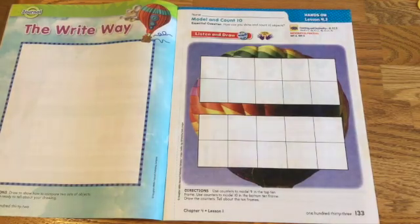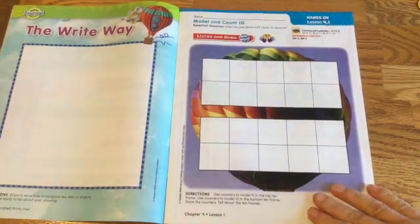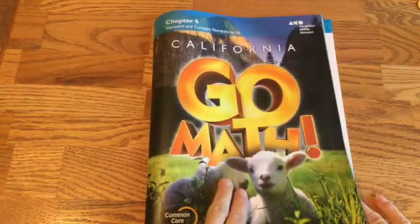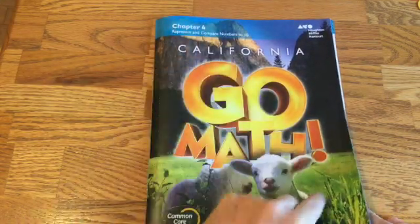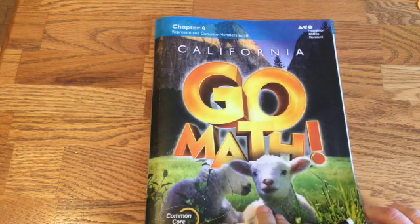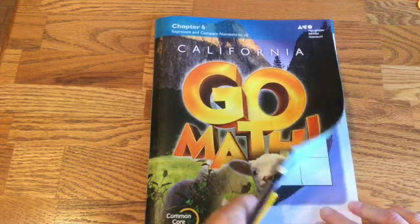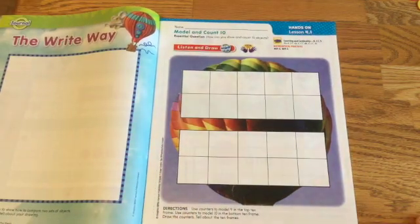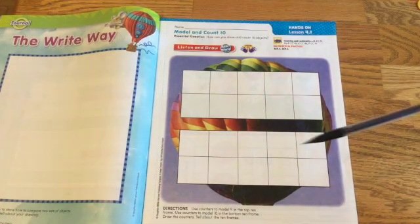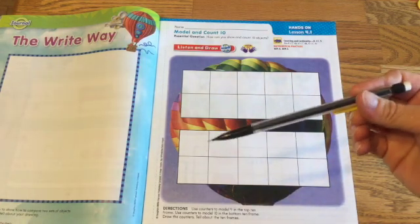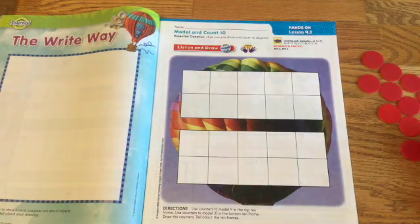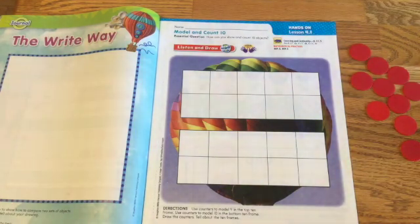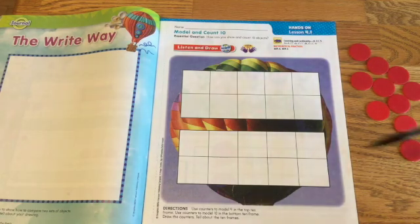Hello, kindergartners. For this lesson, we are now on chapter four. Represent and compare numbers to ten. So for this chapter, you're going to need your pencil. I have a mechanical pencil, it's still a pencil. You're going to need your counters. And that's it for right now. So a pencil and counters. Here we go.